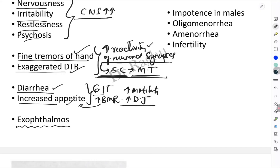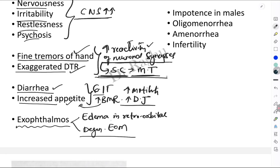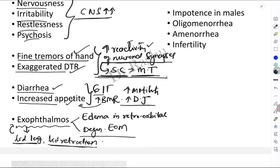Exophthalmos — protrusion of the eyeball — is an important feature of hyperthyroidism. There are two reasons: first, edema in the retro-orbital spaces behind the eyeball, which pushes the eyeball forward; second, degenerative changes in the extra-ocular muscles. Two associated signs are lid lag, where the upper eyelid does not close completely when the person looks down, exposing the upper sclera, and lid retraction, where the upper eyelid is completely retracted back.